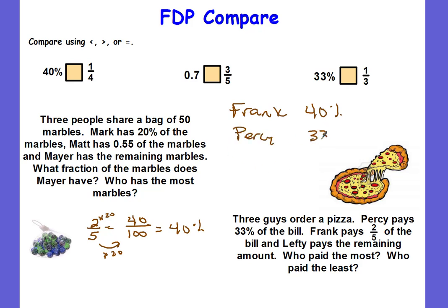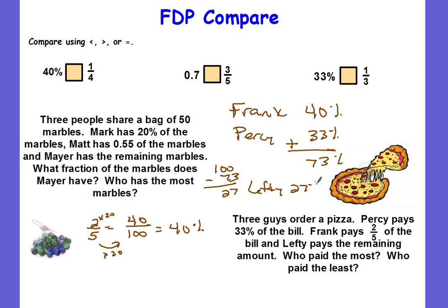Percy is 33 percent and Lefty has the rest. The whole bill is 100 percent. I add Frank and Percy together and get 73 percent. Then I subtract: 100 minus 73 gives me 27. So Lefty pays 27 percent.